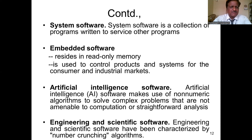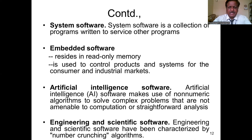Embedded software resides in read-only memory and is used to control products and systems for consumer and industrial markets. Artificial intelligence software makes use of non-numerical algorithms to solve complex problems that are not amenable to straightforward computation or analysis. Engineering and scientific software is characterized by number-crunching algorithms.